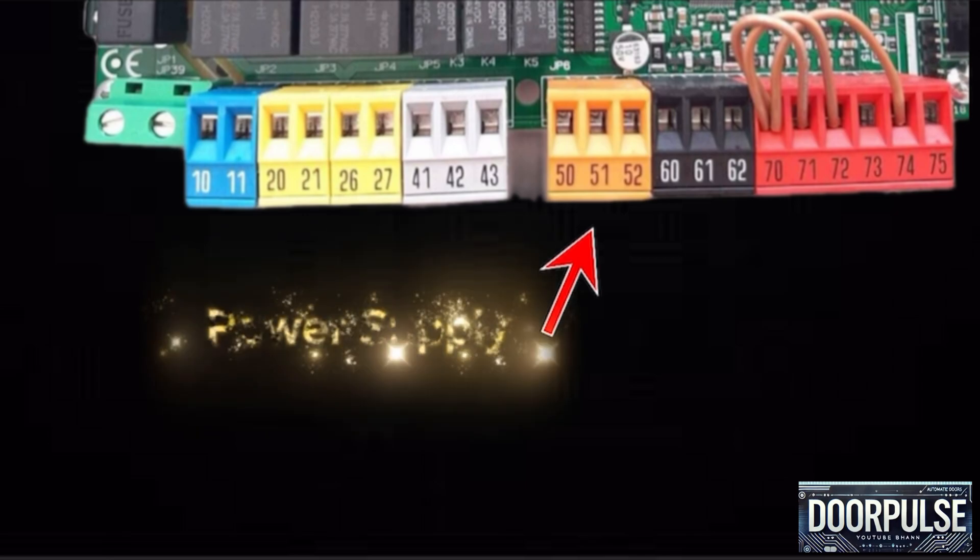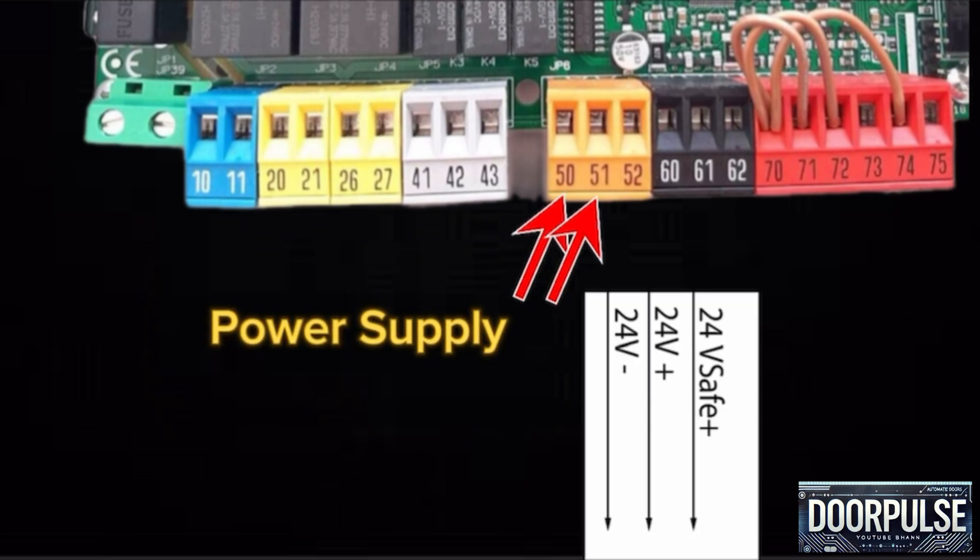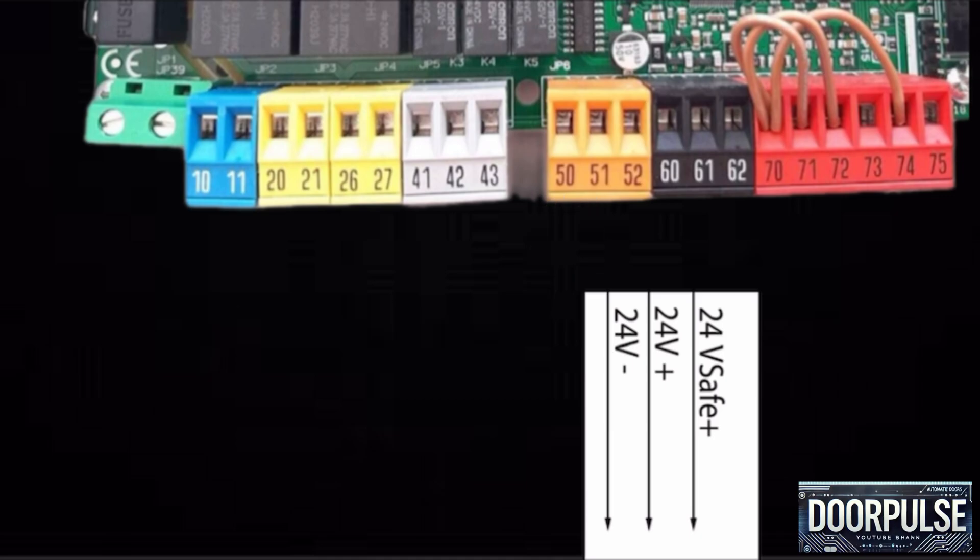JP6 block: a block for accessories power supply output. Terminal 50 and terminal 51 are DC power supply for accessories. Terminal 50 is negative output and terminal 51 is positive output.